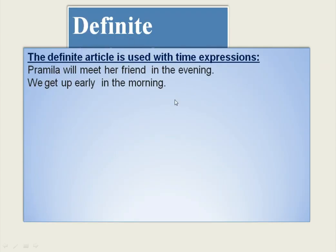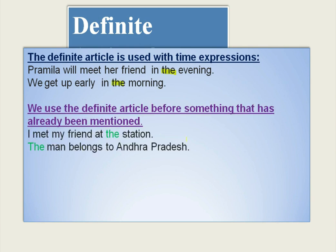We use the definite article with time expressions. For example, 'in the evening' — 'THE' is used between 'in' and 'evening'. Similarly, 'We get up early in the morning.' 'In the morning' indicates a time expression. We also use the definite article before something that has already been mentioned: 'I met my friend at the station' — referring to a particular station already mentioned.